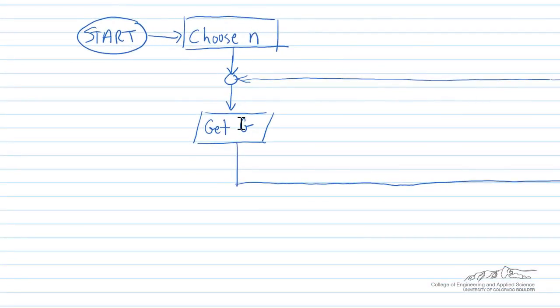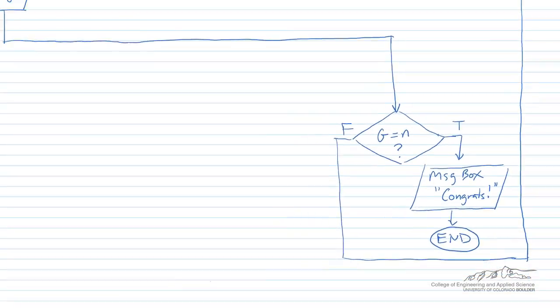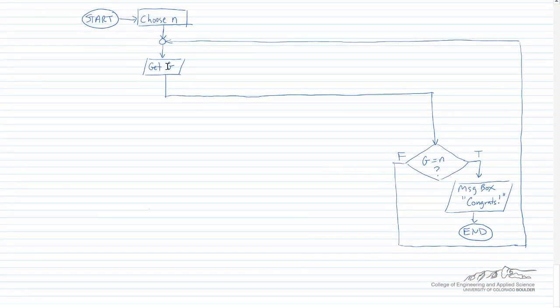We start, we choose N, we get G, that's the guess from the user. If G equals the random number that was chosen by the program, then we message box something like congrats. Otherwise, we go back up and we get a new guess.